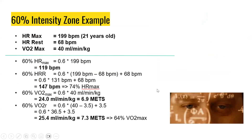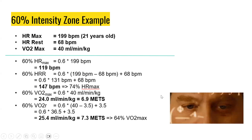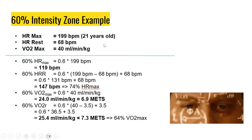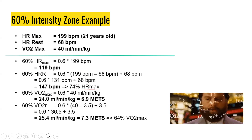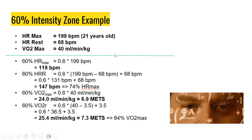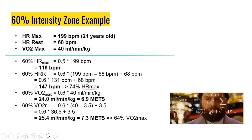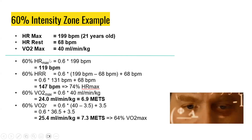Let's go over an example at a 60% intensity zone using all these different methods. This sample subject is a 21-year-old individual with a heart rate max of 199 beats per minute and a heart rate at rest of 68 beats per minute, and a VO2 max of 40 mL/min/kg. Using the zero-to-peak method — percentage of heart rate max — 60% of 199 equals 119 beats per minute.